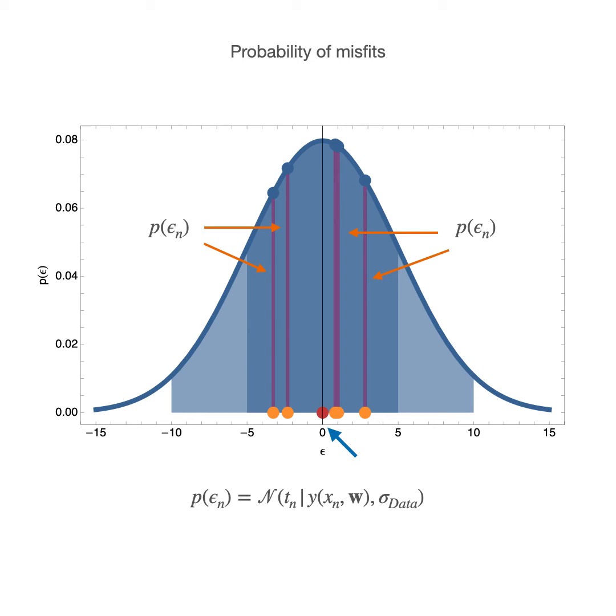The figure is made to scale. Now the vertical purple line segments are the values of the probabilities. From the values of the probabilities the likelihood function is the product of them, the product of the purple line segments.